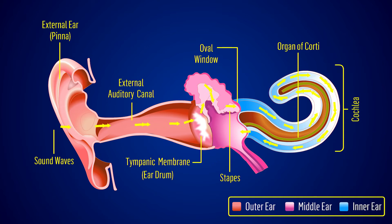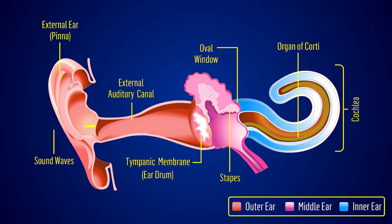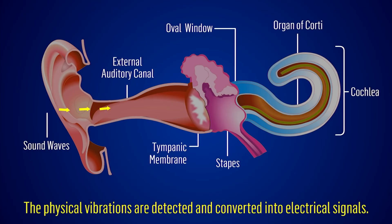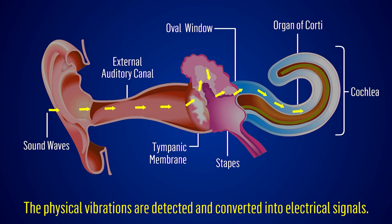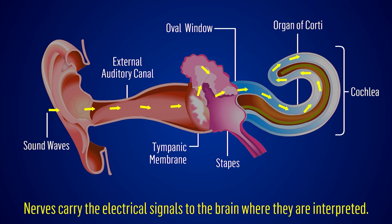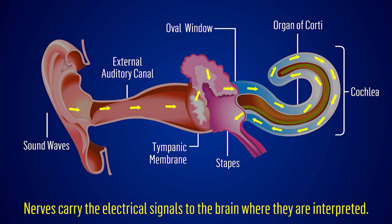This stimulates the sensory cells of the organ of Corti atop the basilar membrane to send nerve impulses to the brain. The physical vibrations are detected and converted into electrical signals. Nerves carry the electrical signals to the brain where they are interpreted.